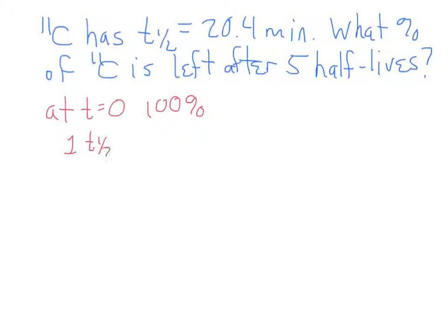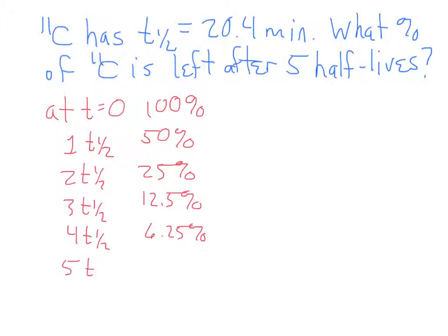After one half-life, how much would we have left? 50%. After a second half-life, we would be at 25%. A third half-life, we'd be at 12.5%. A fourth half-life, 6.25%. And a fifth half-life, we would be at 3.12% present. So that would be the answer for that.